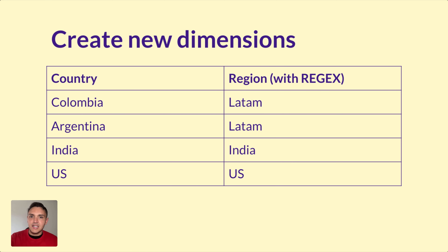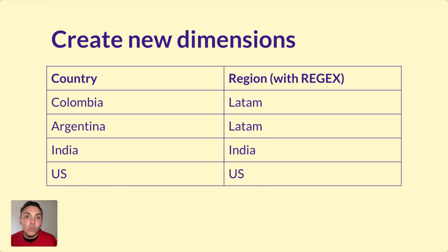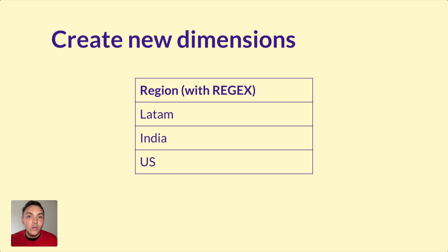Here's an example table where I have a column 'country' with values Colombia, Argentina, India, and US. My new dimension created with regular expressions says: if Colombia, tag it as LATAM; if Argentina, tag it as LATAM; India, keep it the same; US, keep it the same. Now my new dimension shows my data clean.